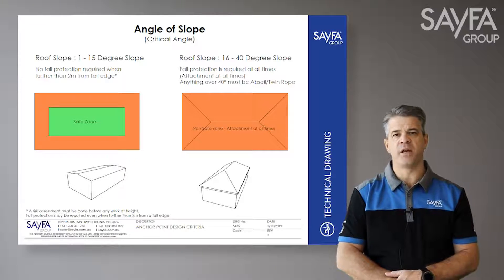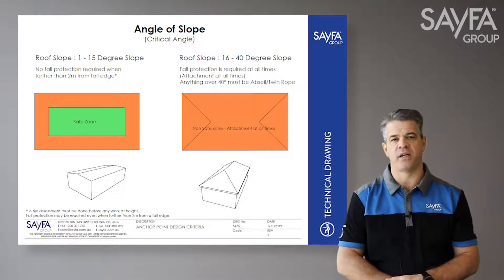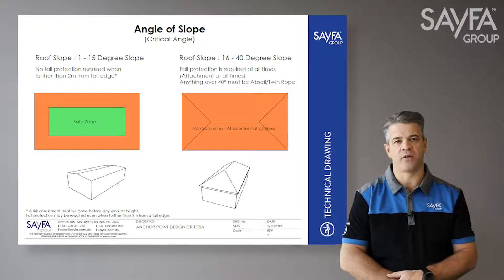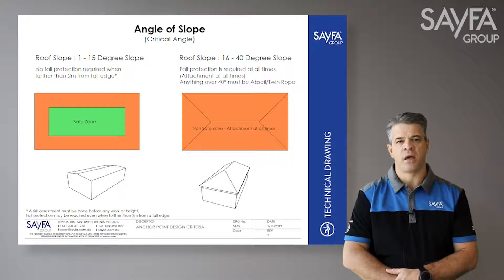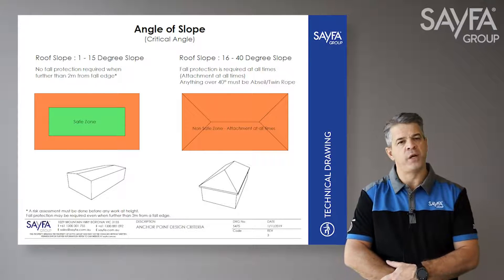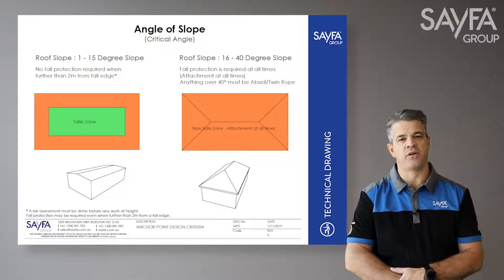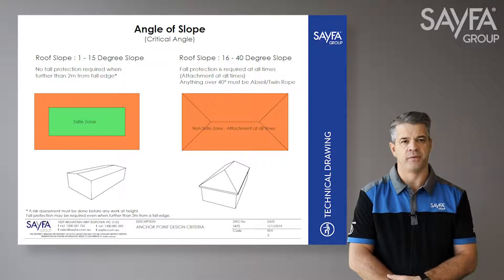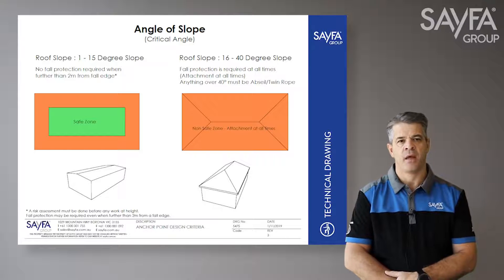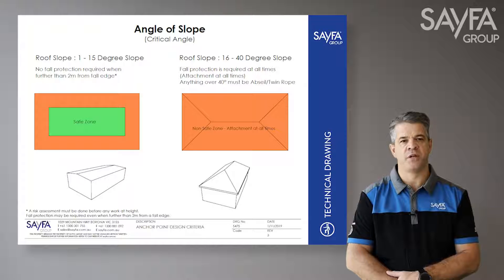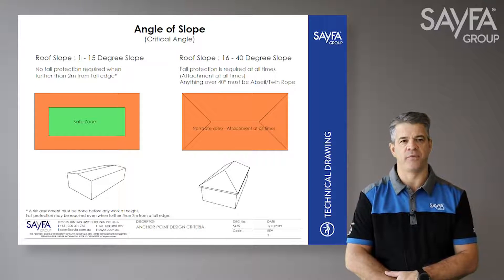Roofs can be divided into two categories: Category One — roof pitch under 15 degrees, and Category Two — roof pitch 16 degrees and above.